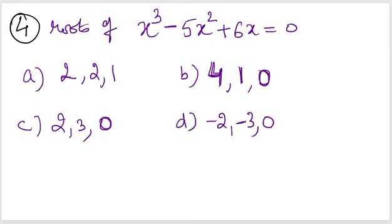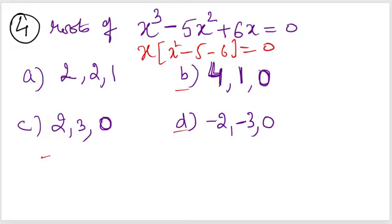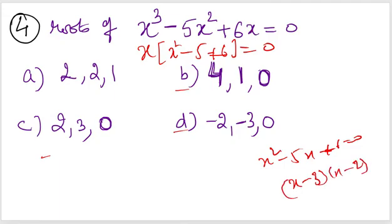Fourth example: x³ − 5x² + 6x = 0. There is no constant term, so the constant is zero, meaning the product of roots is zero. This means at least one root is zero. You can factor out x to get x(x² − 5x + 6) = 0, giving one root as zero. The quadratic factors as (x−3)(x−2) = 0, so the roots are 0, 2, and 3. The option showing roots 0, 2, 3 is the answer.